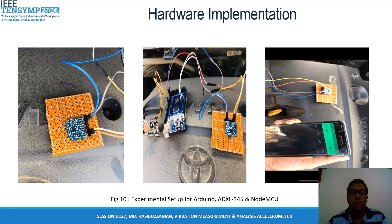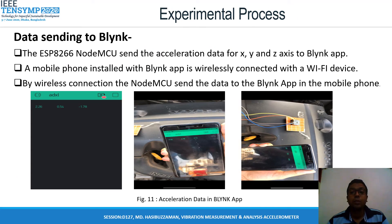Hardware implementation comes after seeing successful software simulation. In Figure 10, the experimental setup for Arduino, ADXL345, and NodeMCU are shown. Now the experimental process of data sending to the Blynk app: the ESP8266 NodeMCU sends the acceleration data for X, Y, and Z axes to the Blynk app. By wireless connection, the NodeMCU sends the data to the Blynk app on the mobile phone. In Figure 11, the acceleration and frequency data of a car engine sent to the Blynk app is shown.